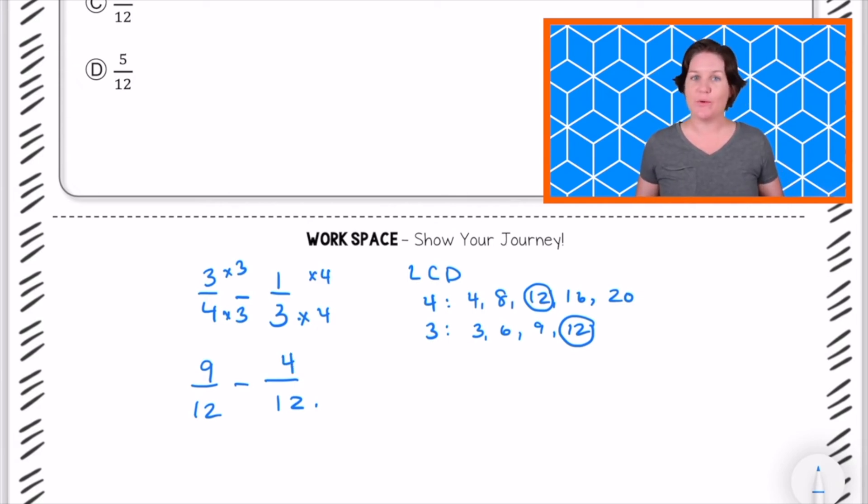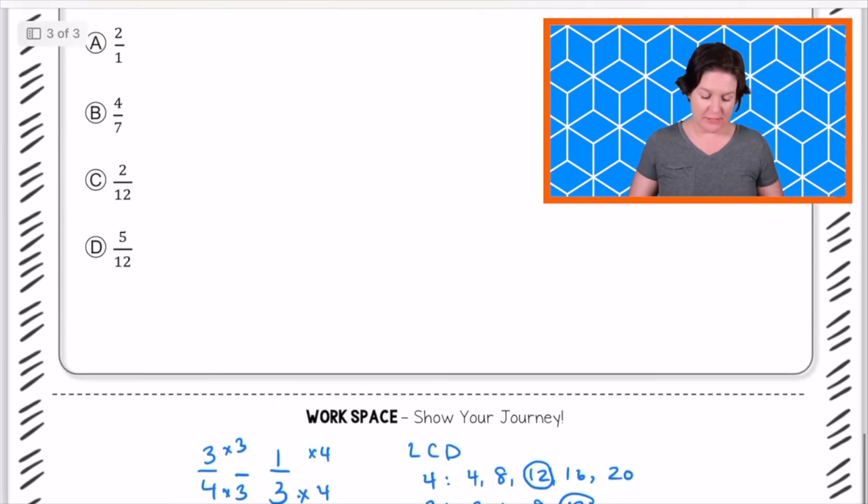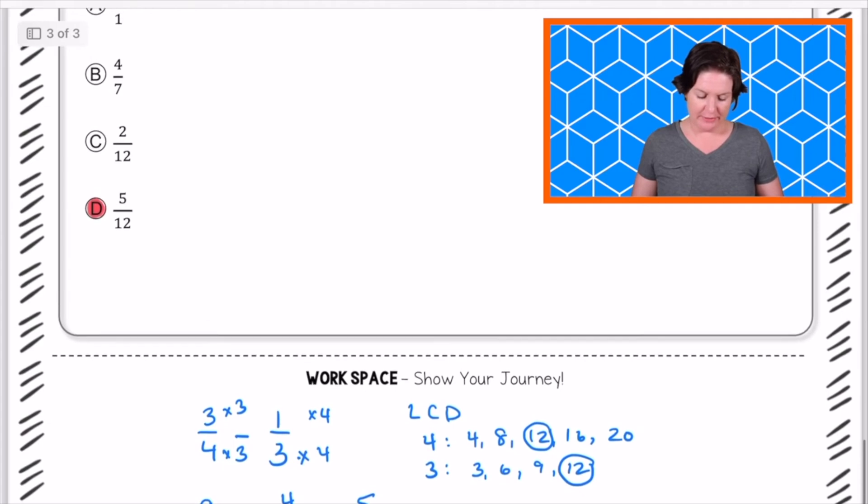That was a long journey, but now we're here. We have matching denominators. All is good. 9/12 minus 4/12 would be 5/12. Do we have that as an answer choice? We do. We have D. Boom. Just like that. Let me leave that right there for you. Pause the video to jot down your notes.